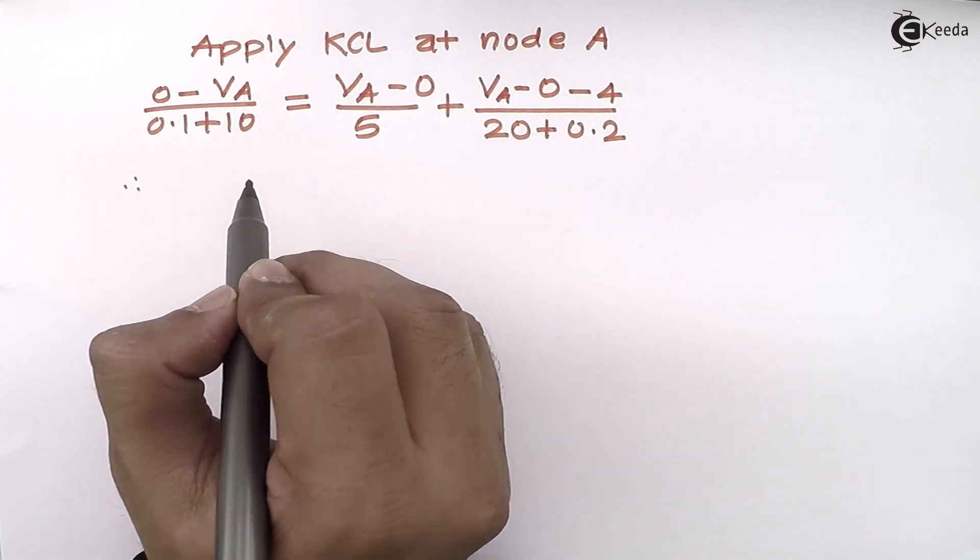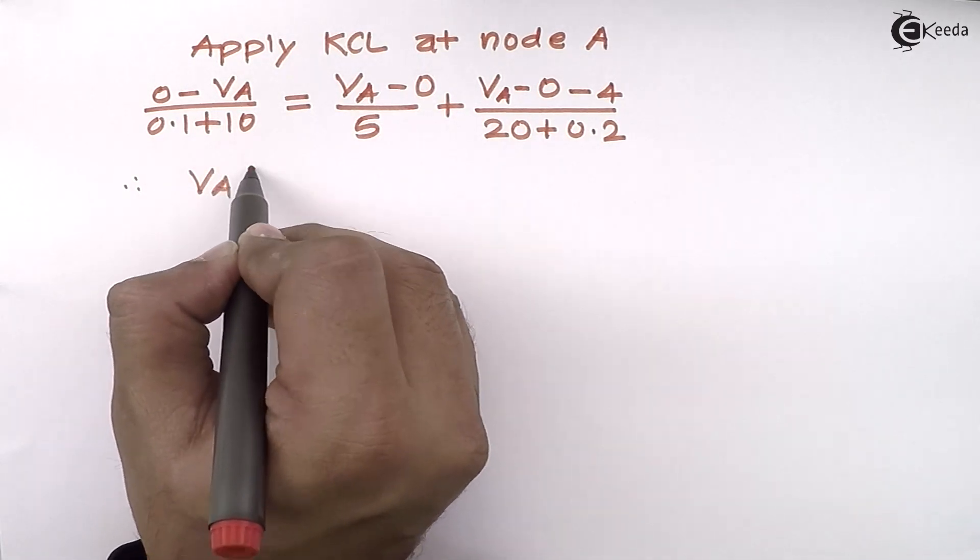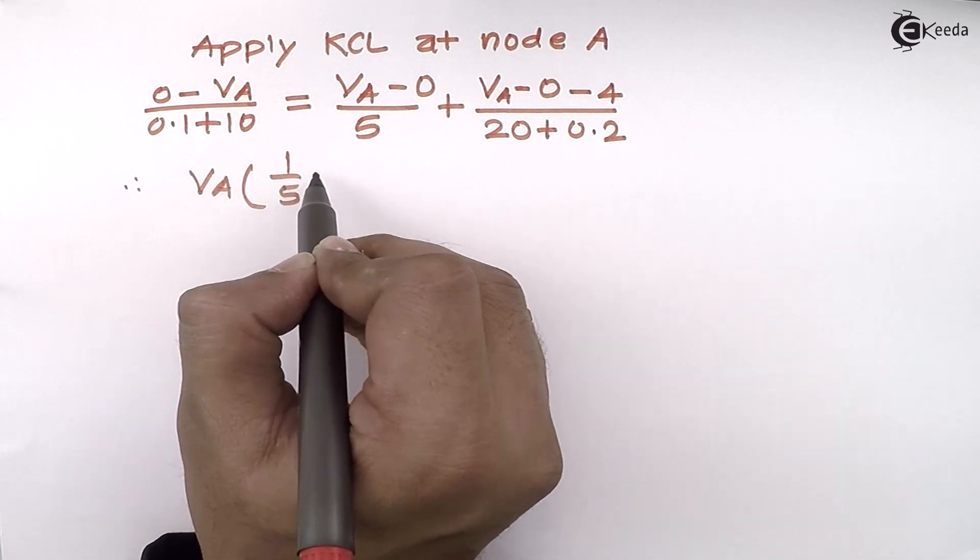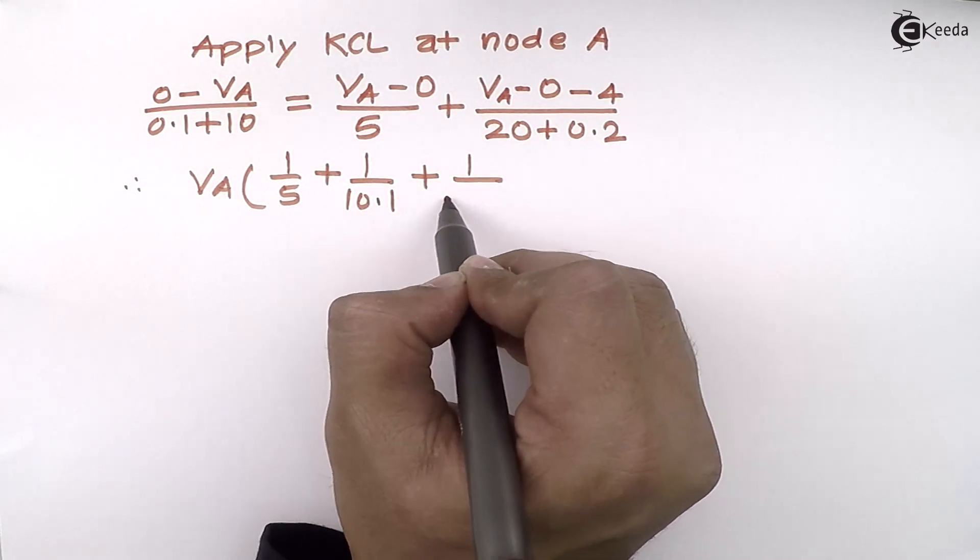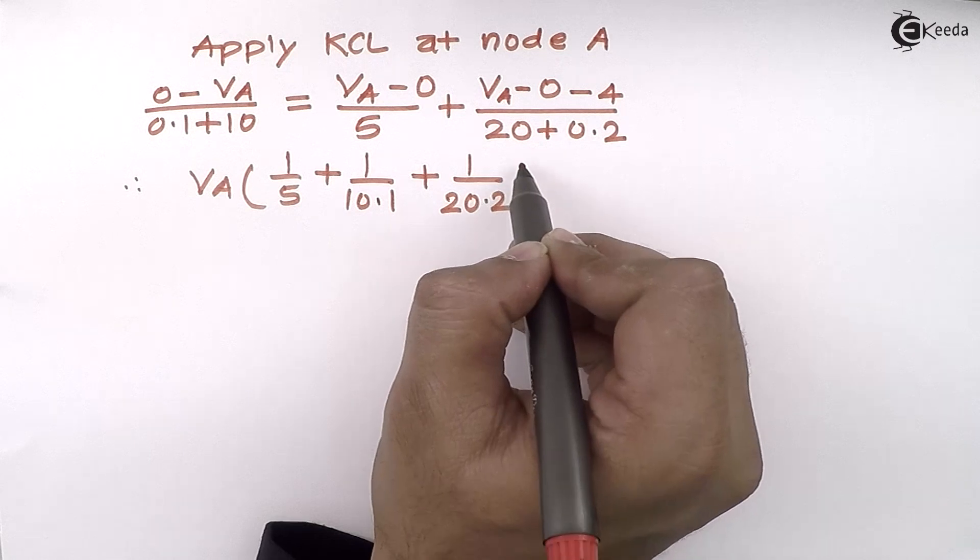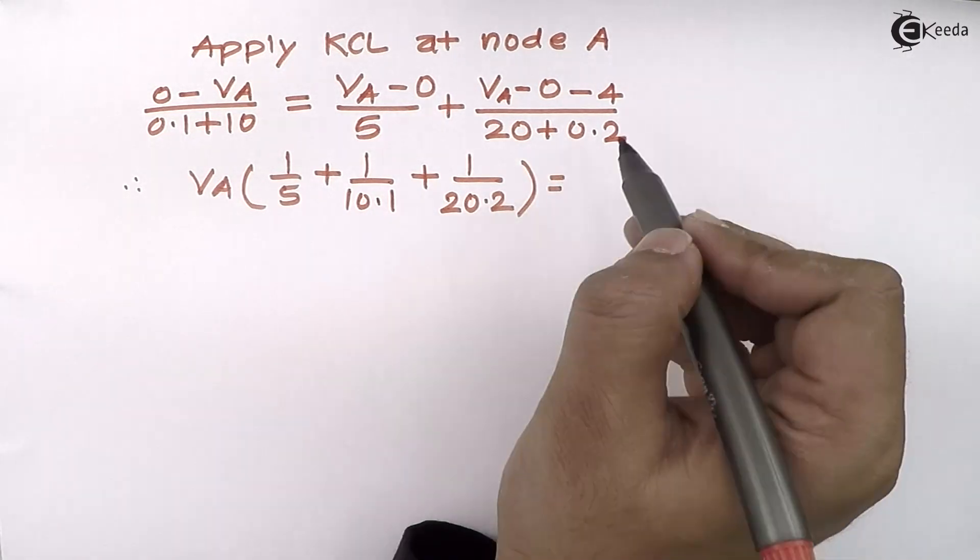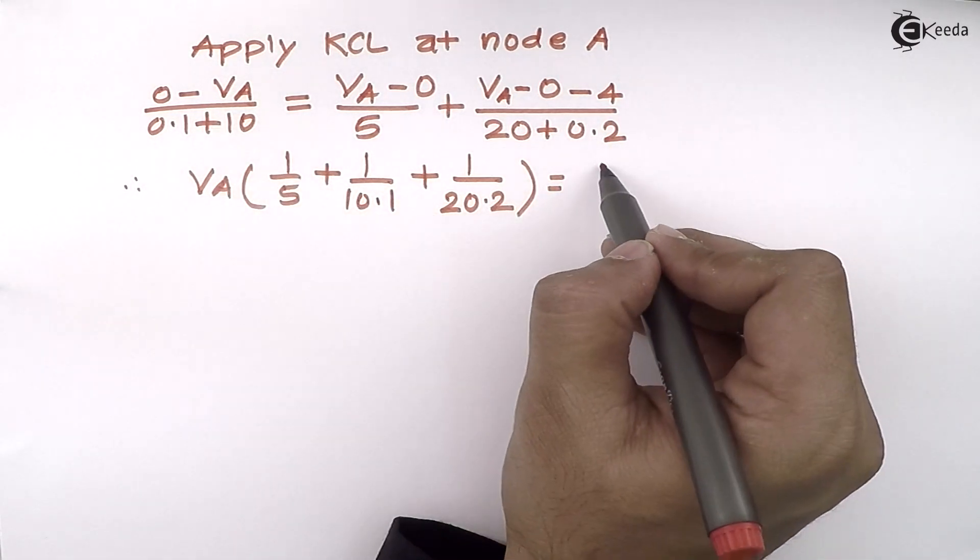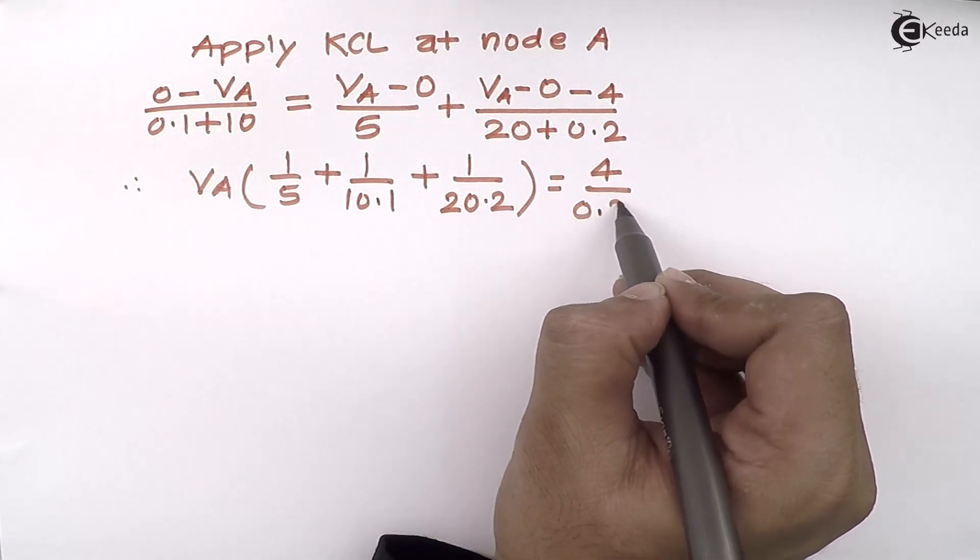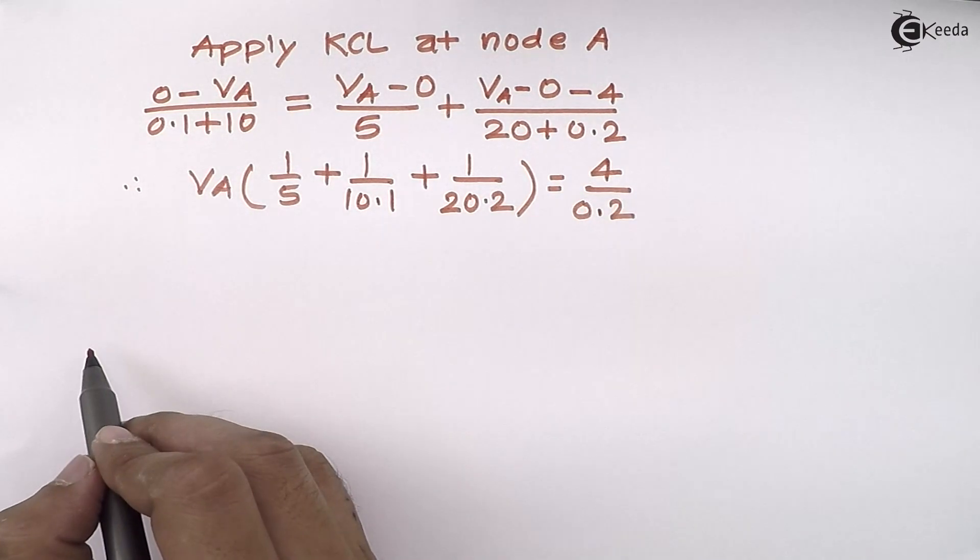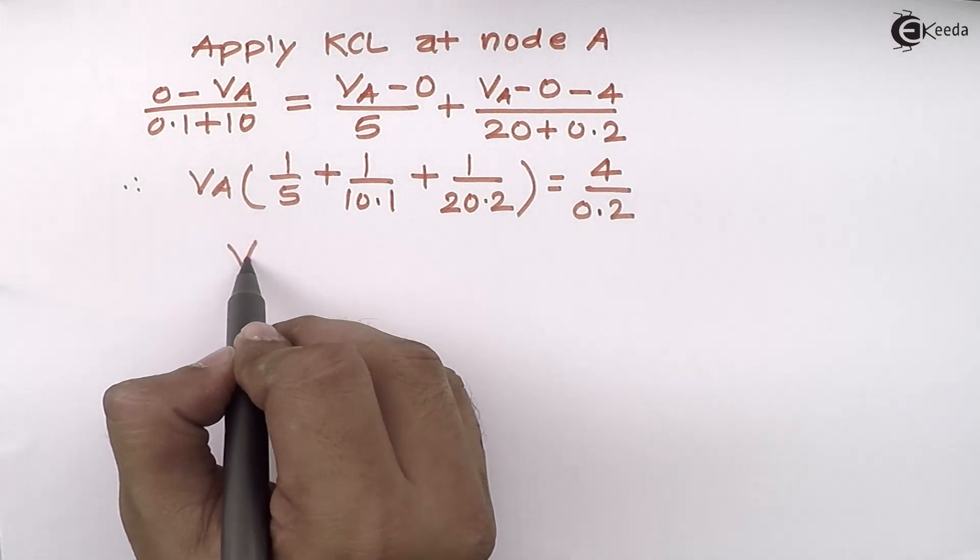Let's rearrange the terms. I will consider all VA on one side, which will give me this equation. And the constant, if I take this side, it will be 4 divided by 0.2. So after solving this equation, I will get VA as 0.5682 volts.